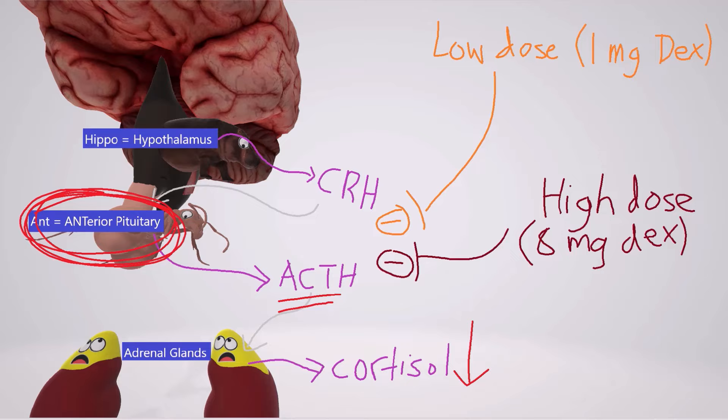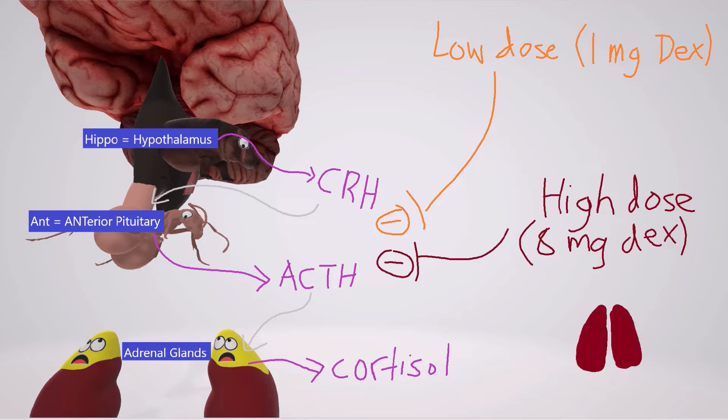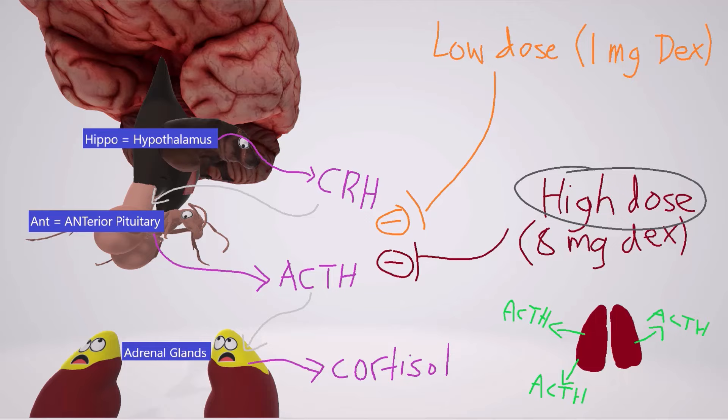When the high dose is given and we're able to suppress the cortisol, we know it's Cushing's disease — that the problem is in the anterior pituitary. However, let's say the problem is not in the anterior pituitary but in the lungs, where there's ectopic ACTH production. The lungs are releasing ACTH, which goes to the adrenal glands and tells them to increase cortisol release. The high dose of dexamethasone will inhibit ACTH from the anterior pituitary but will have absolutely no effect on the ACTH from the lungs.